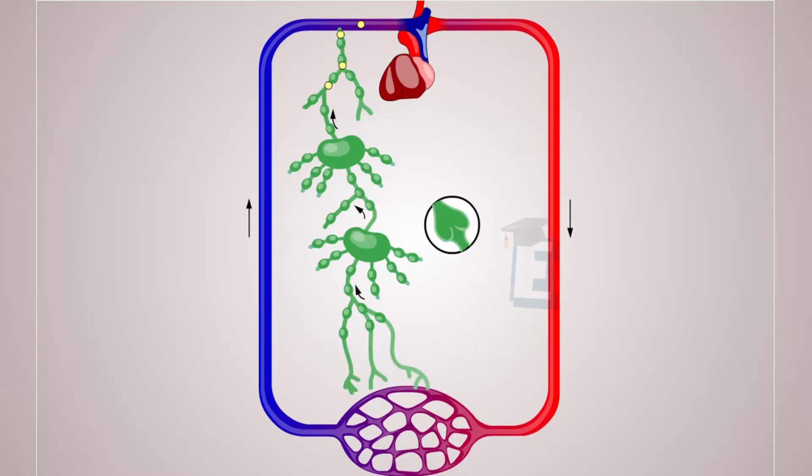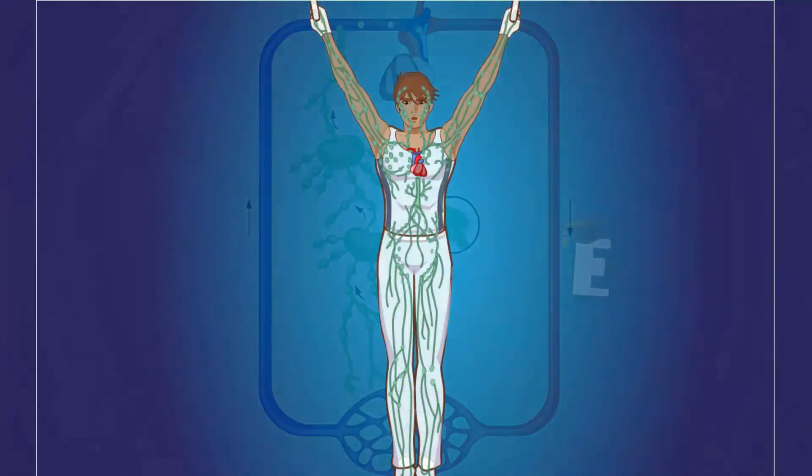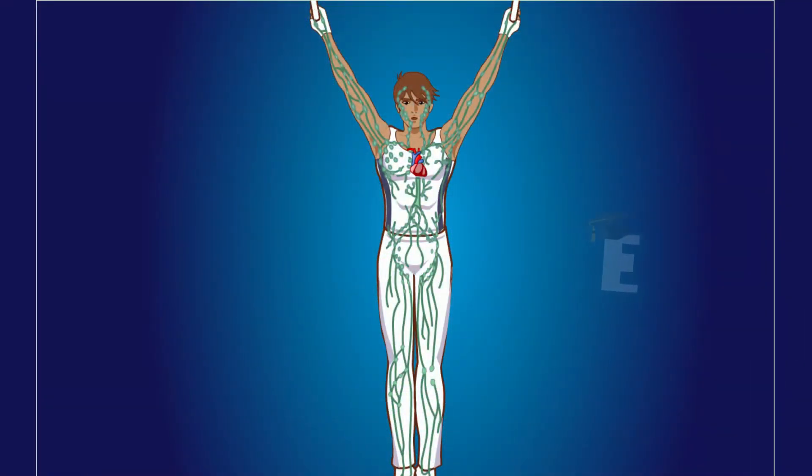The contraction of smooth muscles in lymphatic vessels and skeletal muscles that are adjacent to the lymphatic vessels will transfer lymph to the larger lymphatic vessels.